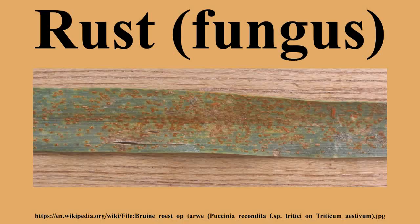During August and September, Ribes spp. give rise to teliospores which infect white pines. Removal of the alternate host disrupts the life cycle of the rust fungi Cronartium ribicola, preventing the formation of basidiospores which infect the primary host. Although spores from white pines cannot infect other white pines, survival spores may overwinter on infected pines and re-infect Ribes spp. the following season. Therefore, infected tissue is removed from white pines and strict quarantines of Ribes spp. are maintained in high-risk areas.